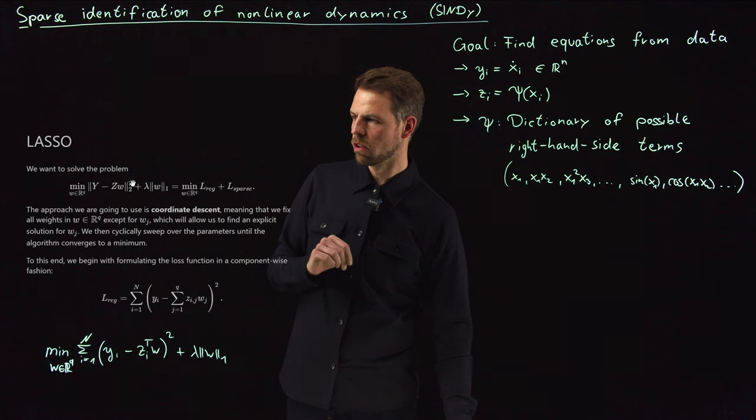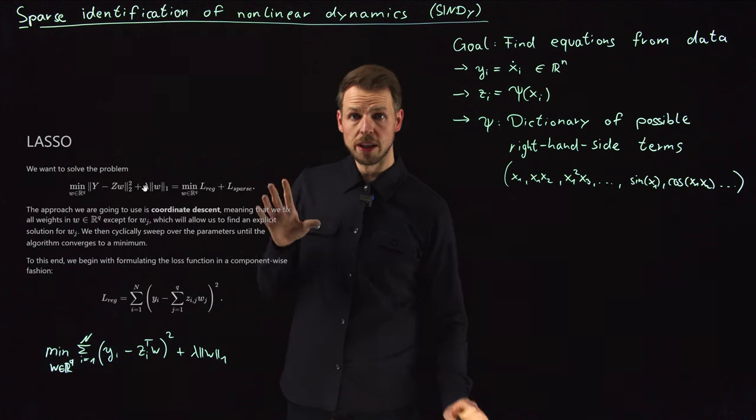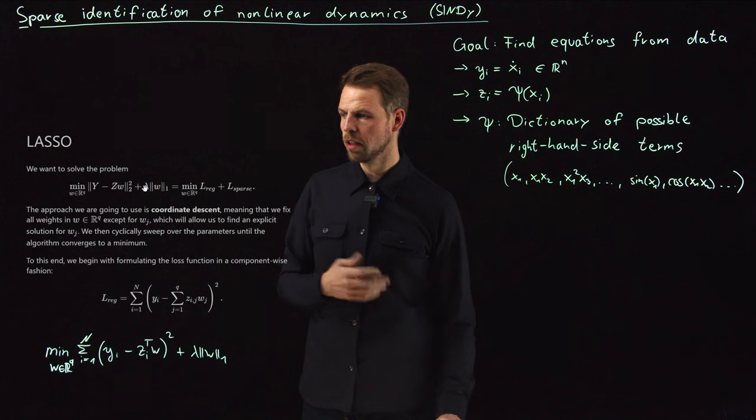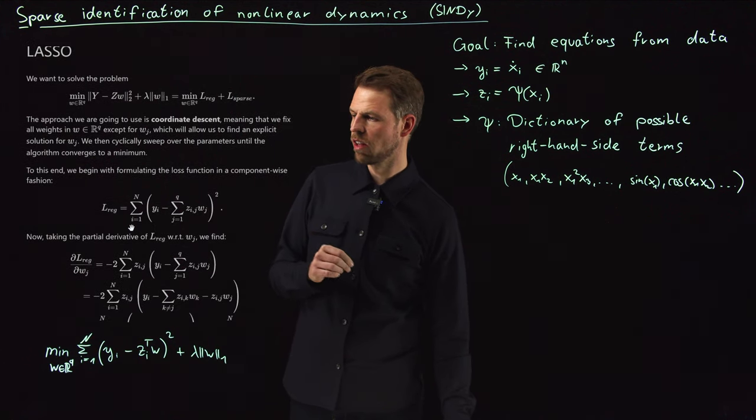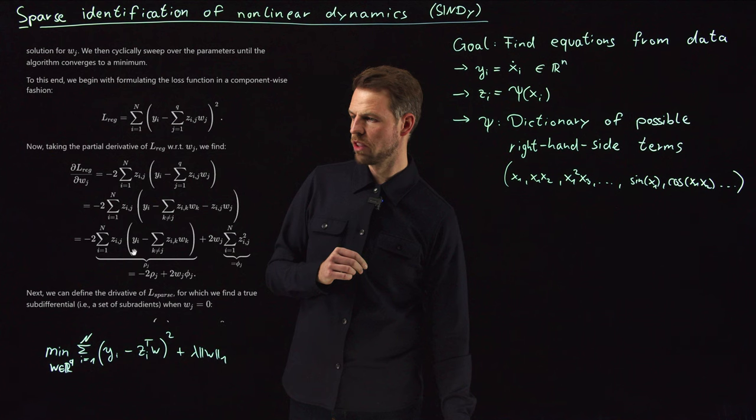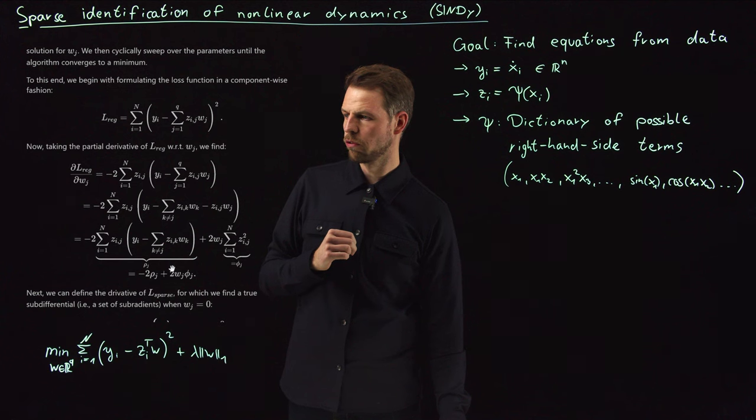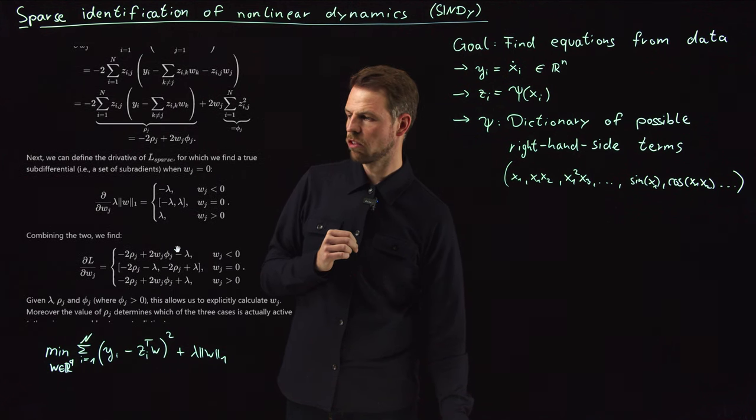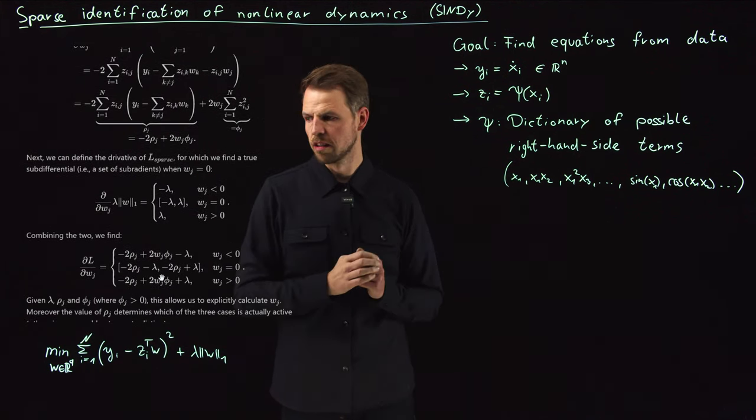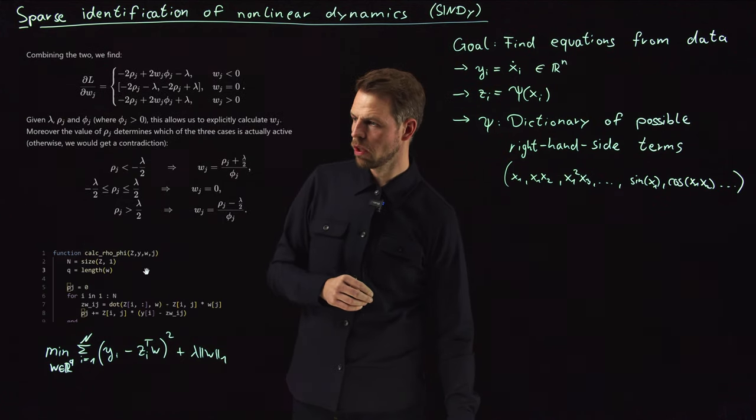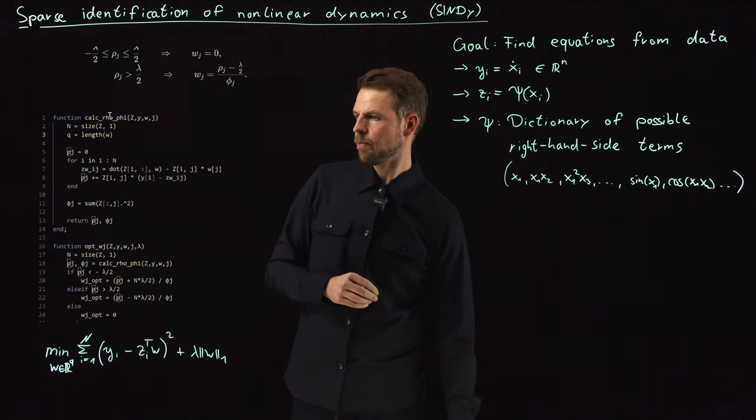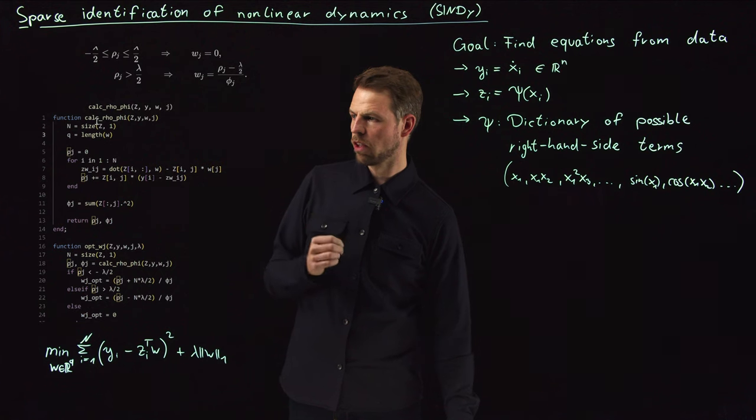Here's once more the problem that we have discussed in a lot of detail in the previous videos, and here's the mathematical derivation that we did to get the derivative for the coordinate descent, where we got this rho term independent of wj, the phi term also independent of wj, and then you can solve this for wj. You get this case distinction that we had before, exactly as in the last video.